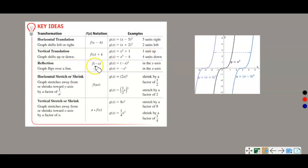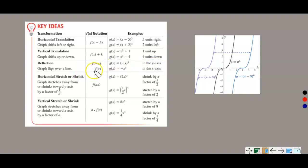For reflections: if the negative is inside the parentheses — F(−x) — so if X is the negative value, then it's a reflection across the Y axis. If the negative is in front of F of X — that's changing the Y — so negative F(x) will reflect it across the X axis.